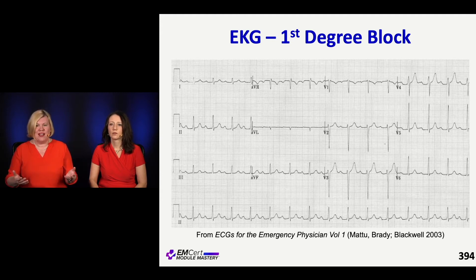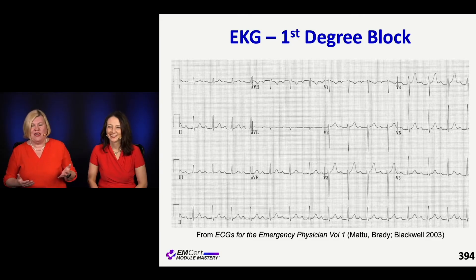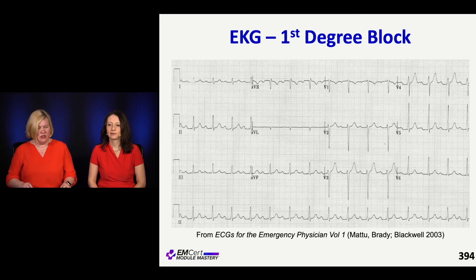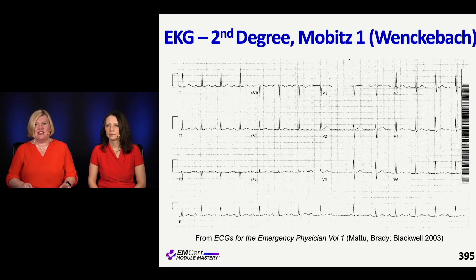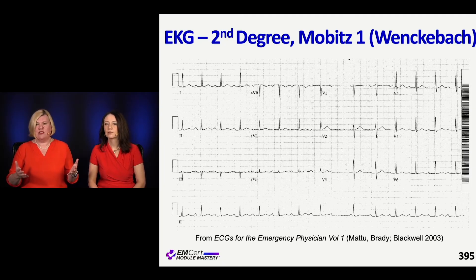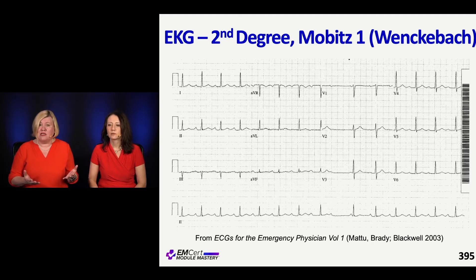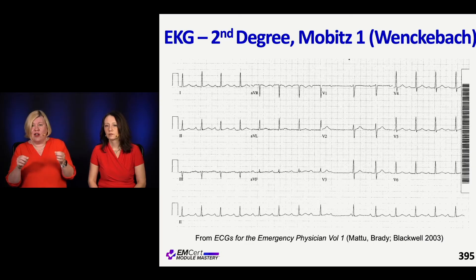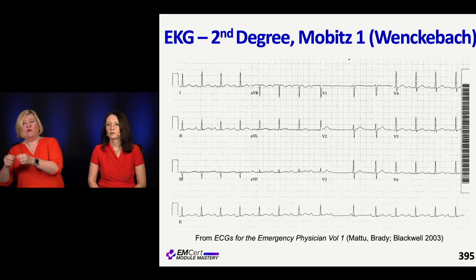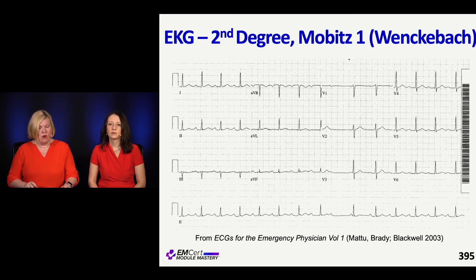This is first degree block — you see the P waves, you see the QRS, everything's lovely, it's just a little too long between the P and QRS. There's some kind of block happening there, but it's not impacting our electrical system significantly. This one is the classic Wenckebach or Mobitz type 1 — it's not slowed down too much, certainly not too much of a bradycardia, but if we look closely at our PR interval, we see that it's getting longer, longer, and then dropping, but it picks back up again, looks normal, then longer and longer, and then dropping.